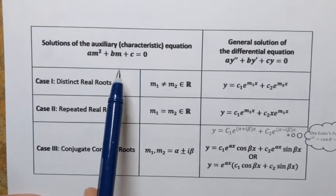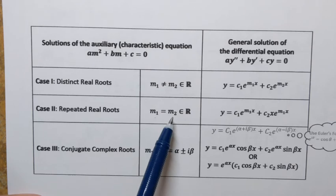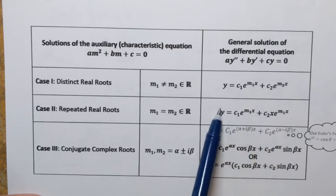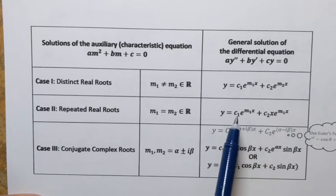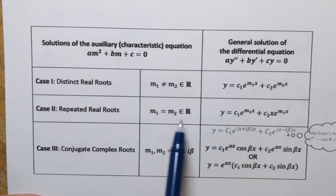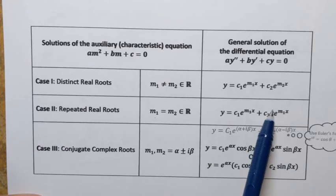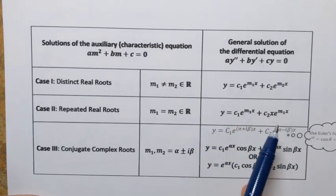The second case is when the auxiliary or characteristic equation has repeated real roots — you obtain two roots but they happen to be the same real number. In that case, the general solution has a similar structure to the first case, but the difference is that the same root m appears as the coefficient of x in both exponential terms, and there is also an extra factor of x in one of the terms.